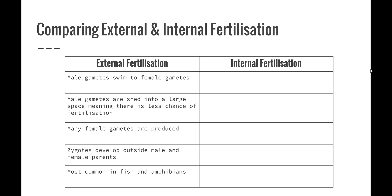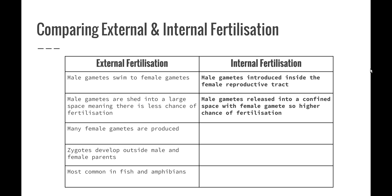This table is a nice comparison of external and internal fertilization. During external fertilization, the male gametes swim to the female gametes, whereas in internal fertilization, the male gametes are introduced inside the female reproductive tract. In external fertilization, male gametes are shed into a large space, meaning there is less chance of survival, whereas in internal fertilization, the male gametes are released into a confined space in very close proximity to the female gametes, giving a much higher chance of fertilization. In external fertilization, many female gametes are produced, whereas in internal fertilization only a few female gametes are produced — with humans, it's usually only one egg released per month during ovulation.